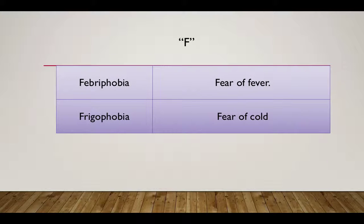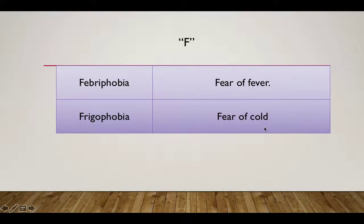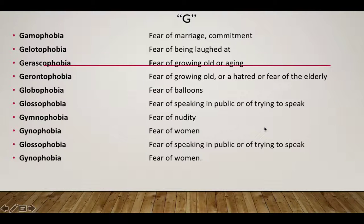Moving further — for alphabet F, there are only two phobias to remember. Febriphobia — fear of fever. Frigophobia — fear of cold. You can remember Febriphobia easily — 'Febri' relates to fever. For Frigophobia, like a fridge is cold, 'frigo' relates to fridge, so Frigophobia is fear of cold.